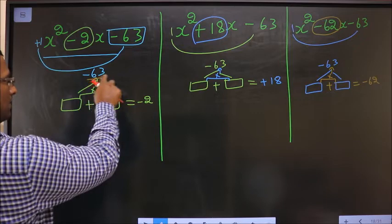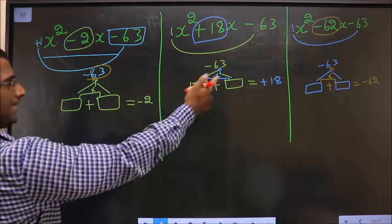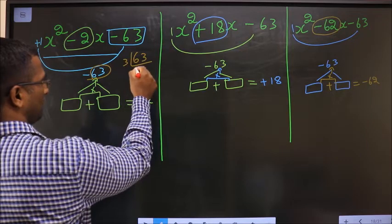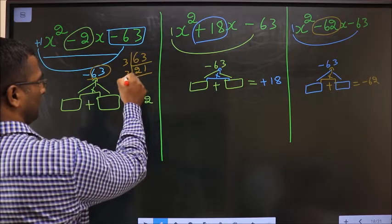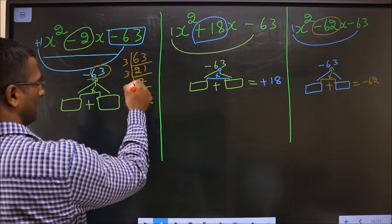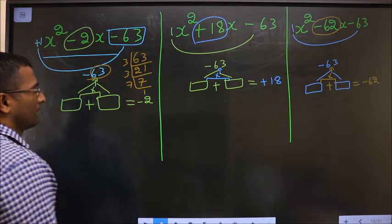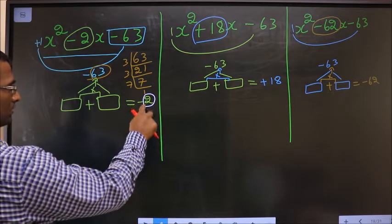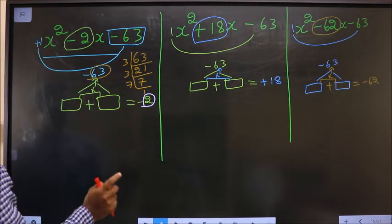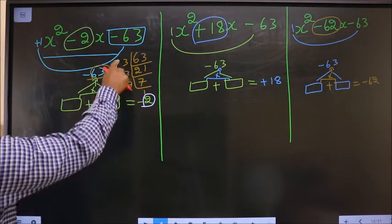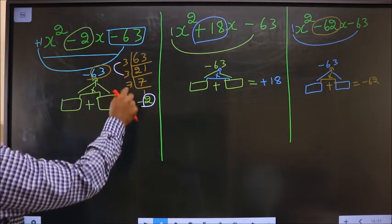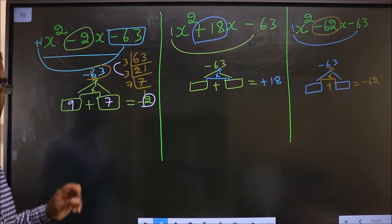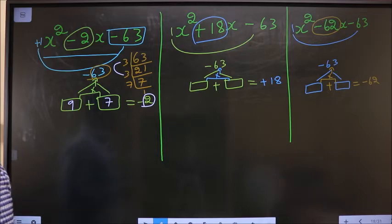To get those two numbers, I take the LCM of 63. The factors are 3, 3, 7. To get a sum of 2, that could only happen if the numbers are 3×3=9 and 7. Because 9 minus 7 is 2, and 9 into 7 is 63.